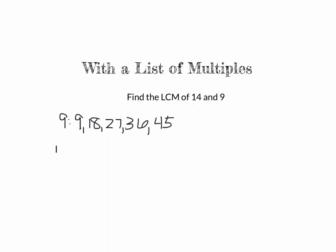Now let's look at the multiples of 14. Your multiplication chart is very helpful here. Fourteen times 1 is 14, times 2 is 28, times 3 is 42, times 4 is 56, times 5 is 70. Looking at the first five multiples of each number — do we have 14 in the list for 9? No. 28? No. 42? No. We're already past the multiples of 9 at 56, so we don't have a common multiple yet.